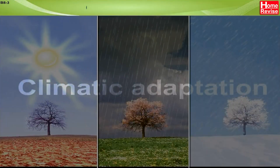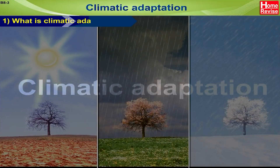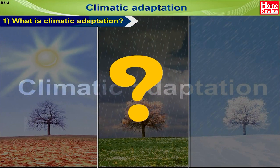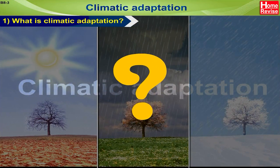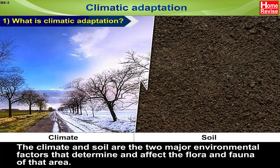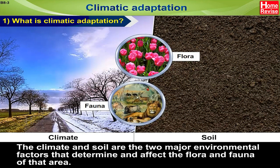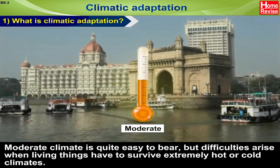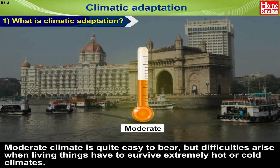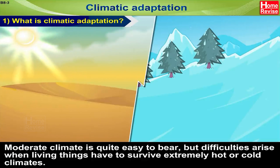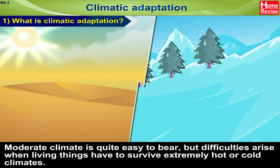Climatic Adaptation: What is climatic adaptation? The climate and soil are the two major environmental factors that determine and affect the flora and fauna of that area. Moderate climate is quite easy to bear, but difficulties arise when living things have to survive extremely hot or cold climates.